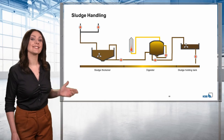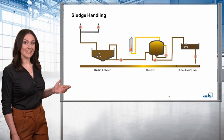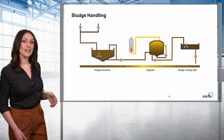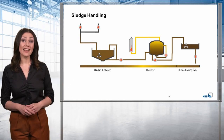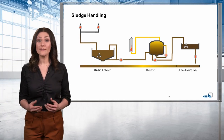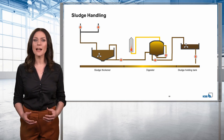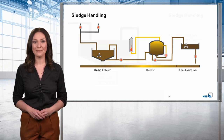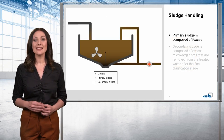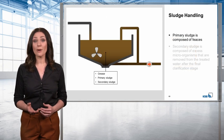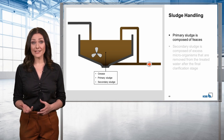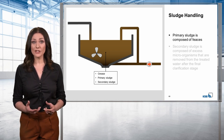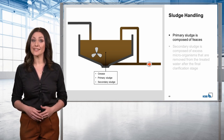We'll now look at sludge treatment. This refers to the sludge evacuated from the previous tanks as part of the wastewater treatment process. This sludge comprises primary sludge, secondary sludge, and grease.